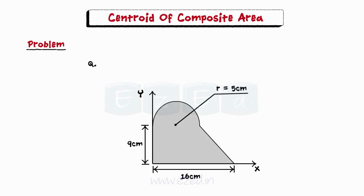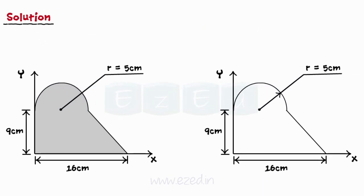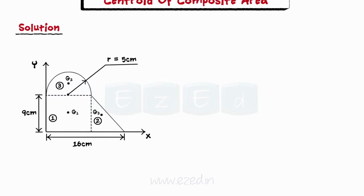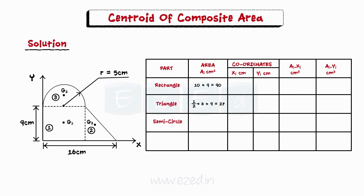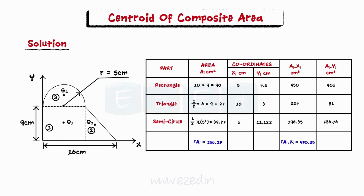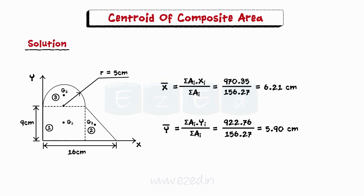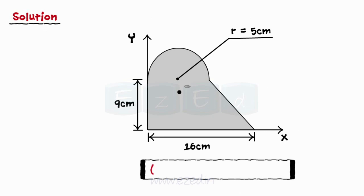Consider the following problem: Find the centroid of the shaded area shown. The composite area can be divided into a rectangle, a right-angled triangle, and a semicircle as shown. Mark the centroids of these three parts as g1, g2, and g3. We will now tabulate the values of the three parts. The areas and the coordinates of centroids of the different parts are first entered in the table. The areas are calculated using the standard formulae for basic geometry. Add up the areas of the different parts to get the total area, and add up the product of area and X coordinate. Using these two formulae, we can find the X coordinate and the Y coordinate of the centroid of the shaded area. Thus, we have found the centroid of the shaded area to be located at the point (6.21, 5.9) in centimeters.